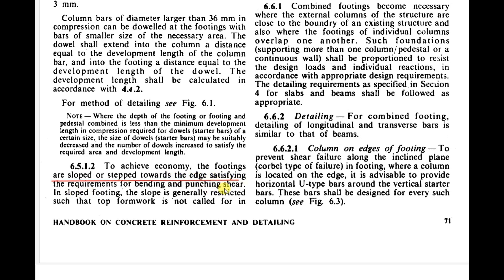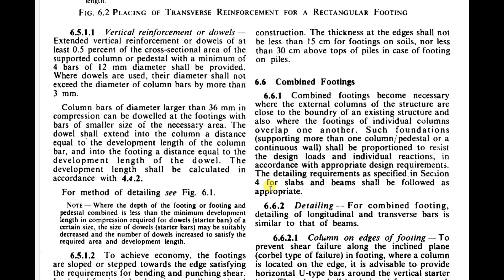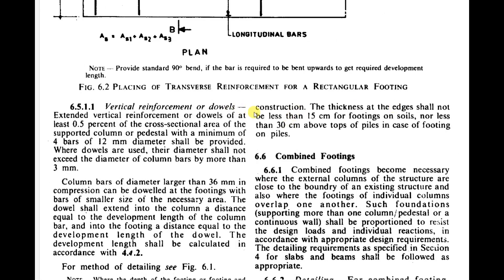To achieve economy, footings are sloped or stepped towards the edge, satisfying requirements for bending and punching shear. For example, if the required footing depth is 600 mm, a sloped or stepped footing can be used economically. In a sloped footing, the slope is restricted so that top formwork is not required. The thickness at the edge shall not be less than 150 mm for footings on soil, or 300 mm above the top of piles for pile-supported footings.